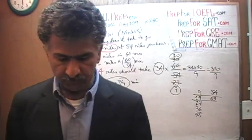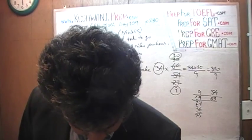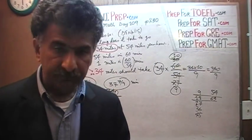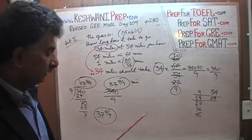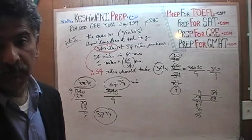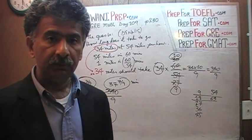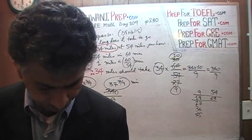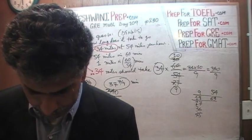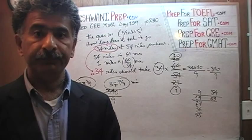That answer — 37 and 7/9 minutes — is your answer. Now if they were asking approximately how many minutes, you would say 38 minutes. But they do not ask approximately. It takes Dennis approximately 38 minutes to travel the same course that took his buddy Jeff 40 minutes. He saves about 3 minutes because he's going 54 miles per hour as opposed to 51 miles per hour — he's going faster. That's it, we're done. I will see you tomorrow on day number 110. Bye now.